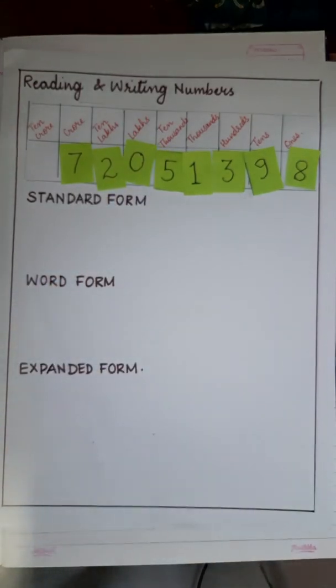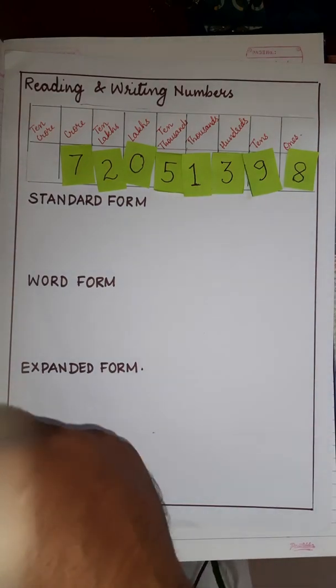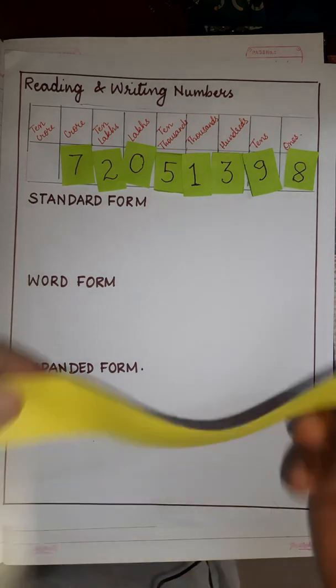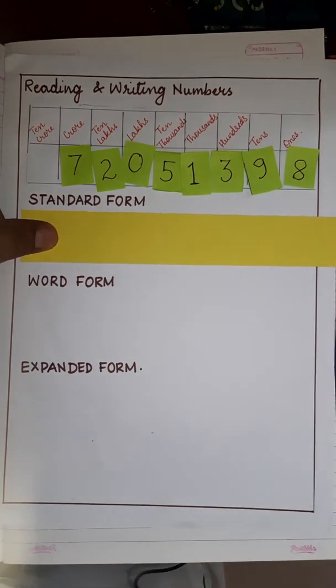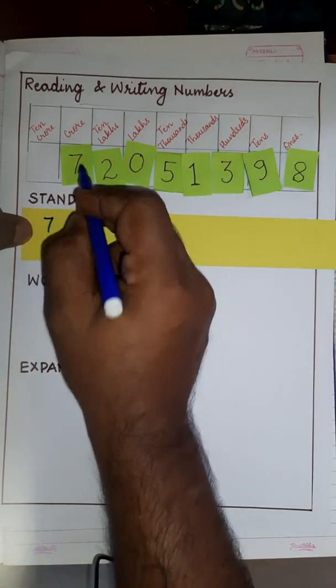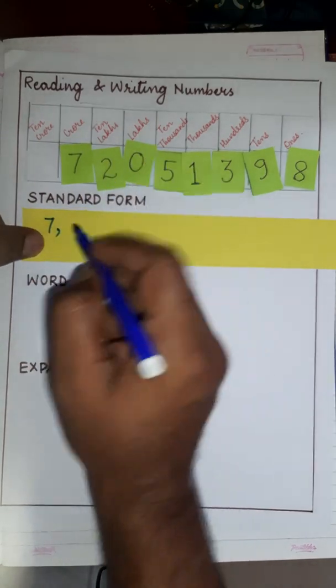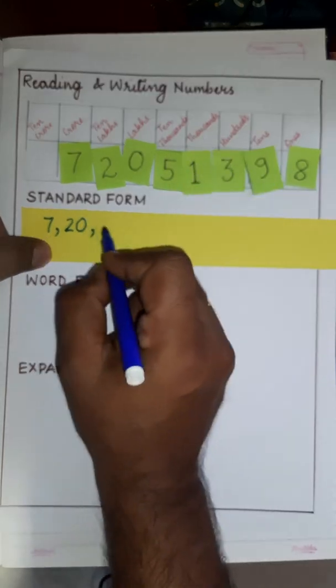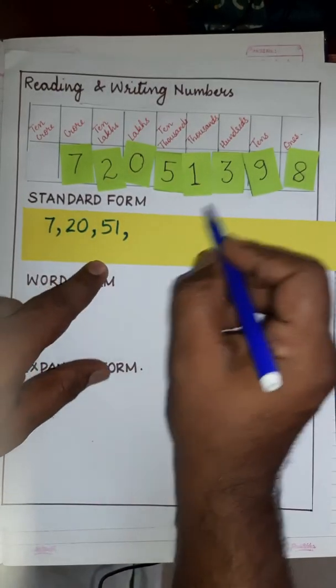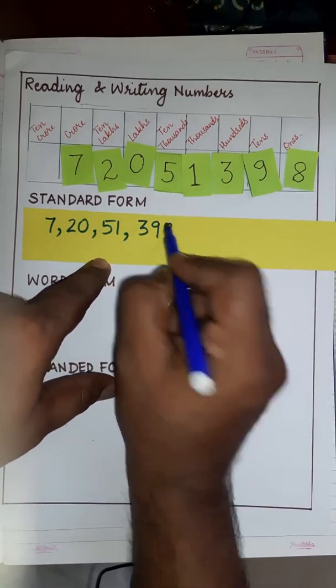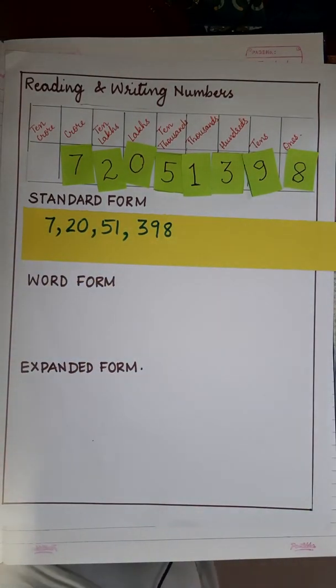Suppose this is the number. So how do we write it in standard form? Let us see, it will be 7 crore, 20 lakhs, 51 thousand, 398. So this would be the standard form.